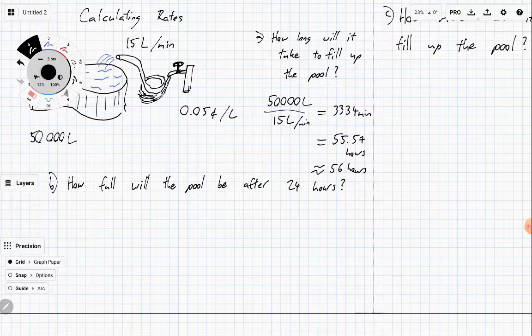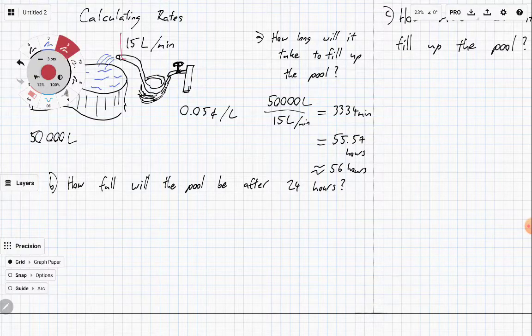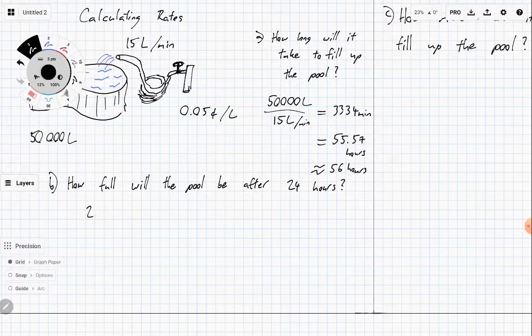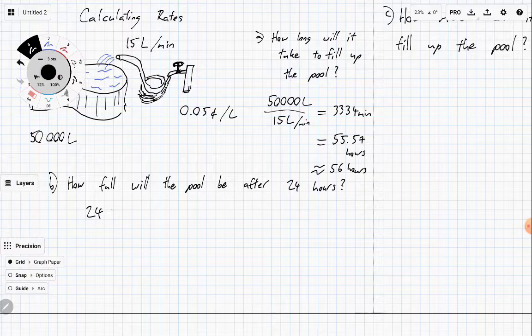So the next question is, how full will the pool be after 24 hours? Well, we know that we get 15 liters per minute, and we're doing it for 24 hours. So let's work that out. Well, 24 hours is really 24 times 60 minutes.